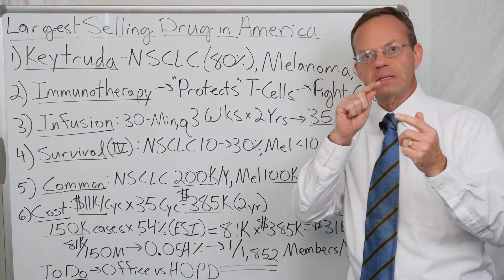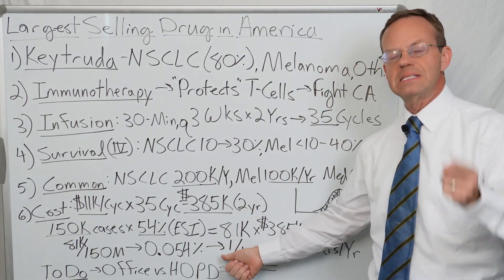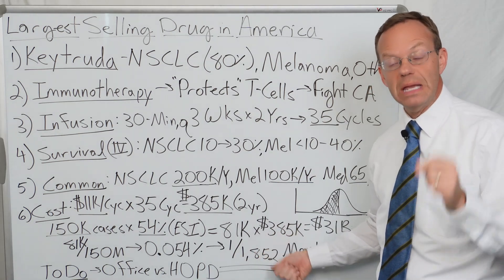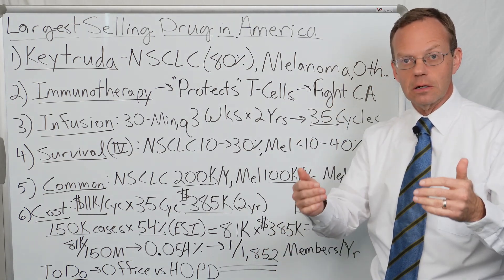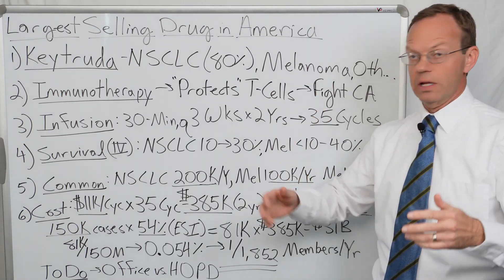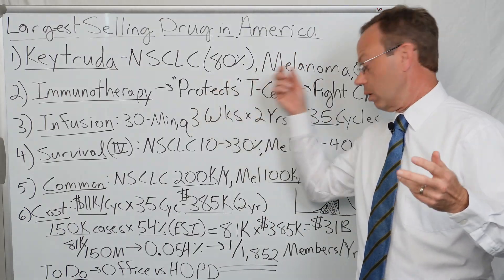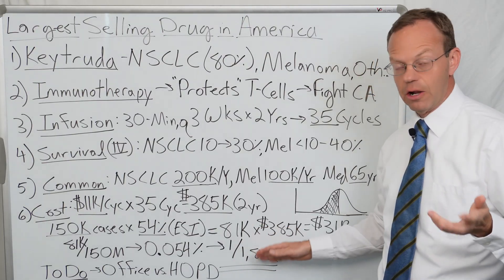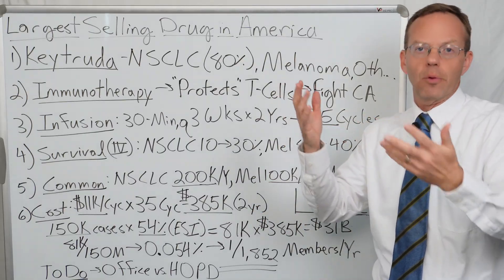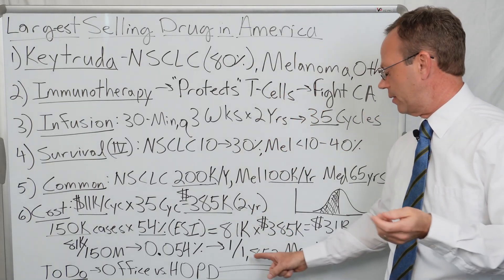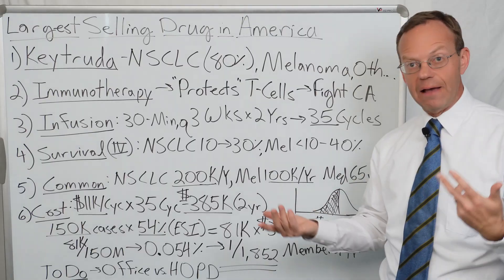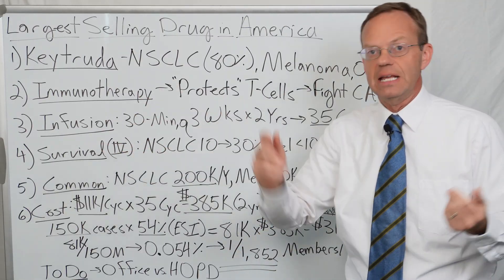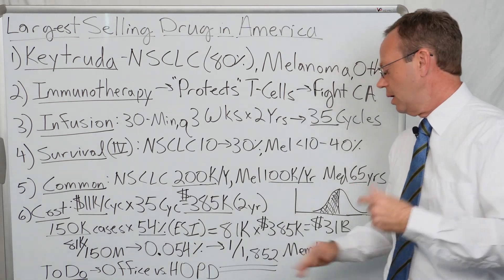If you're an employer and you have 1,852 people on your plan, your employee count is about 900, your total member count is around 1,800, that means on average you're going to have about one case a year. Of course it highly fluctuates - you could go five years without any cases and then have three or four cases in one year.